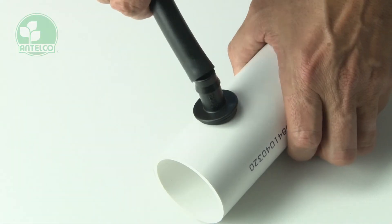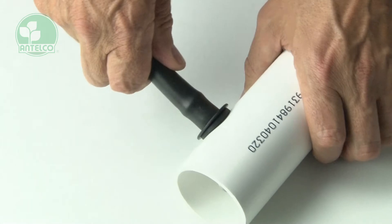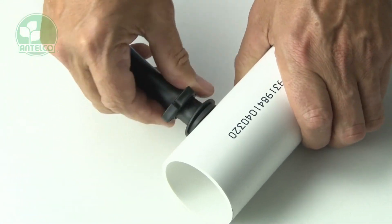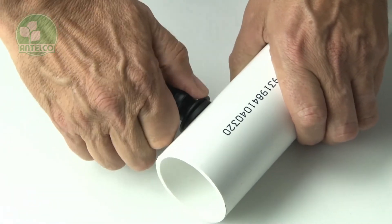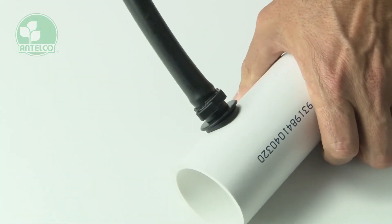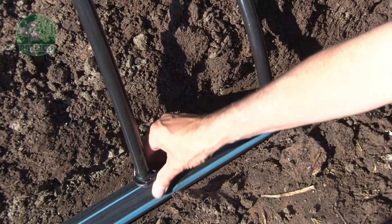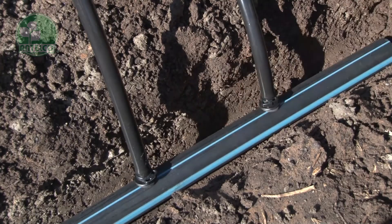Now attach your laterals to the acetal takeoff barbs and secure them with a suitable Entelco Ratchet clamp. As with any new irrigation installation, remember to flush your lines when you're finished and check for leaks before burying your system.